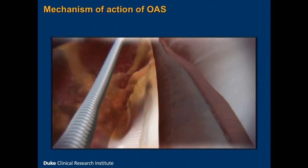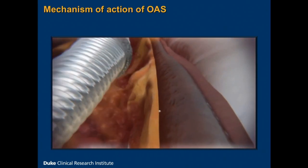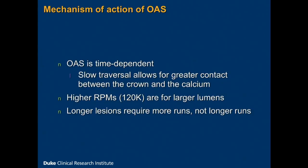One tip is that the slower you go, the more likely you are to avoid significant dissection and significant no-reflow. It's a time-dependent phenomenon — the more contact it has with the vessel wall, the more ablation you get. Slower traversal allows for greater contact between the crown and the calcium, resulting in greater vessel preparation. The standard approach is 80,000 RPMs. If you have a larger lumen — 3.0 and above or 3.5 and above — increase the RPMs to 120,000. Longer lesions require more runs, not longer runs. The device will beep at 25 seconds, and once you hear that beep, you have five seconds to stop ablating and then wait to reestablish coronary flow.